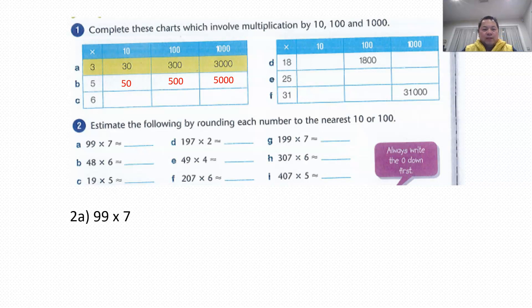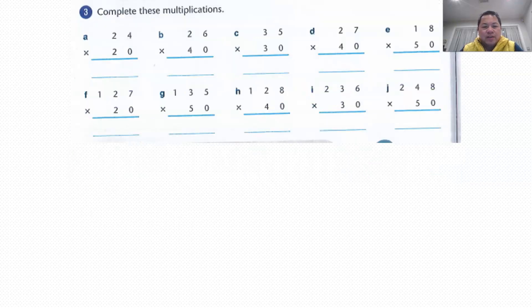So I've done the first one for you, 99 times 7. So we round off 99 to the nearest 10, or some people say nearest 100. So you have 100 times 7, which equals 700. It's straightforward, isn't it? So moving on to the next part.